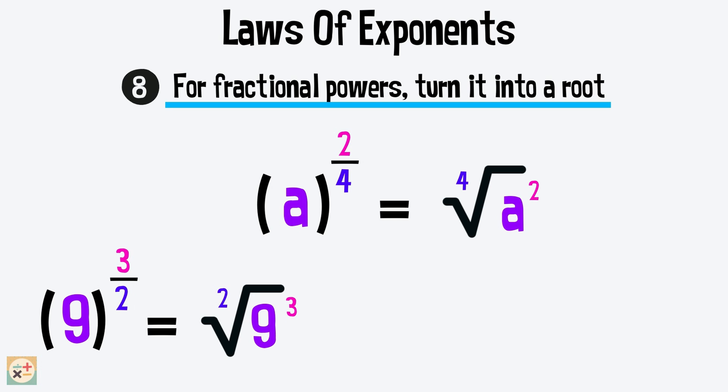In this example, the denominator is a 2, meaning we find the square root. The numerator is a 3, so we cube the base number. Note that for this example, there is no need to write out the 2 in the square root, as it is convention to leave it out.